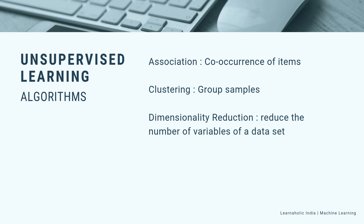The last unsupervised type is dimensionality reduction. It is used to reduce the number of variables in a dataset while ensuring that important information is still conveyed. Dimensionality reduction can be done using feature extraction and feature selection methods. Feature selection selects a subset of original variables, while feature extraction transforms data from a high-dimensional space to a low-dimensional space. For example, PCA algorithm is a feature extraction approach.